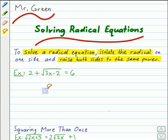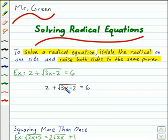2 plus the square root of 3x minus 2 equals 6. First, we want to isolate the radical by subtracting 2 from each side of the equation. That will give us the square root of 3x minus 2 equals 4.